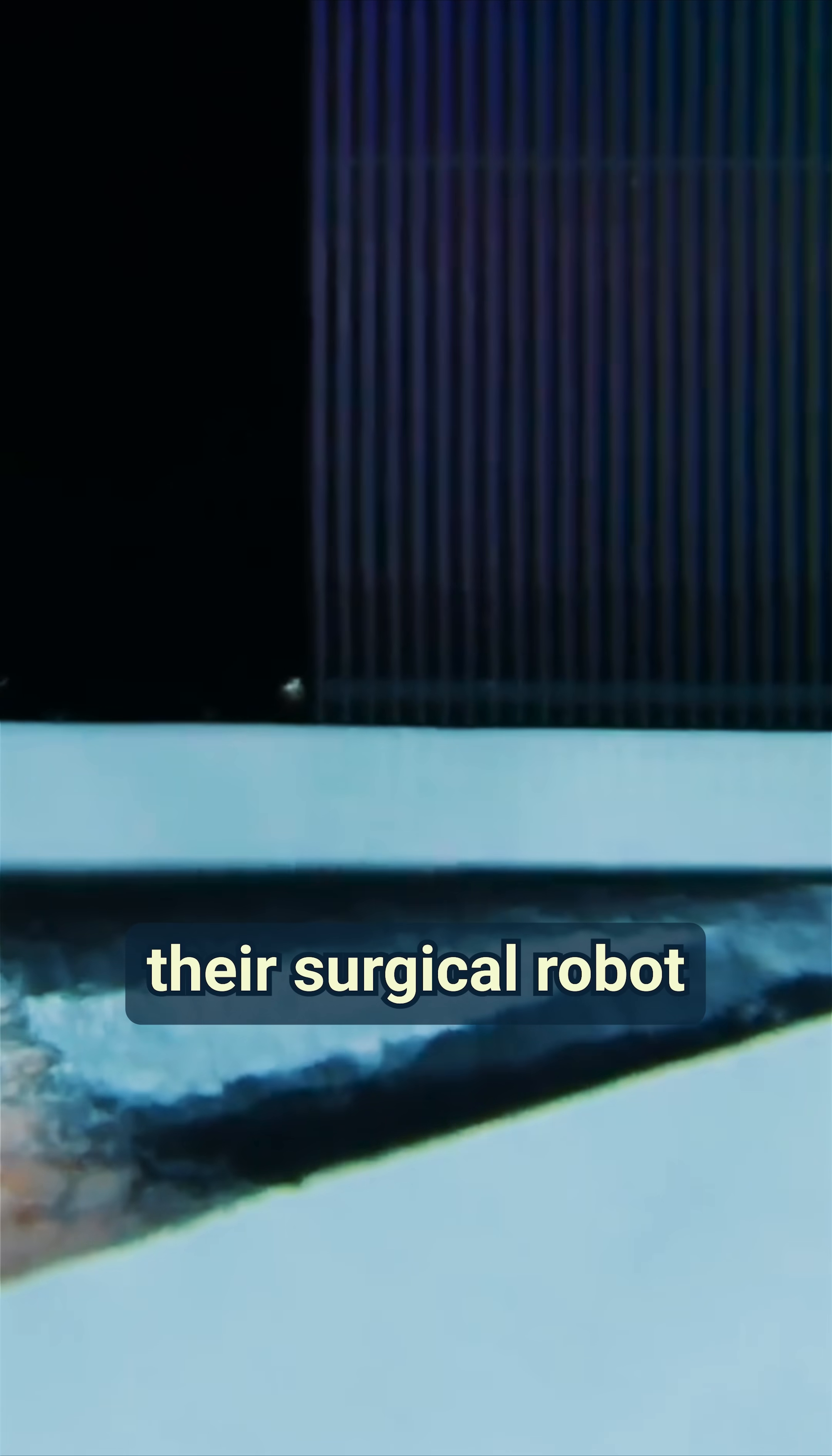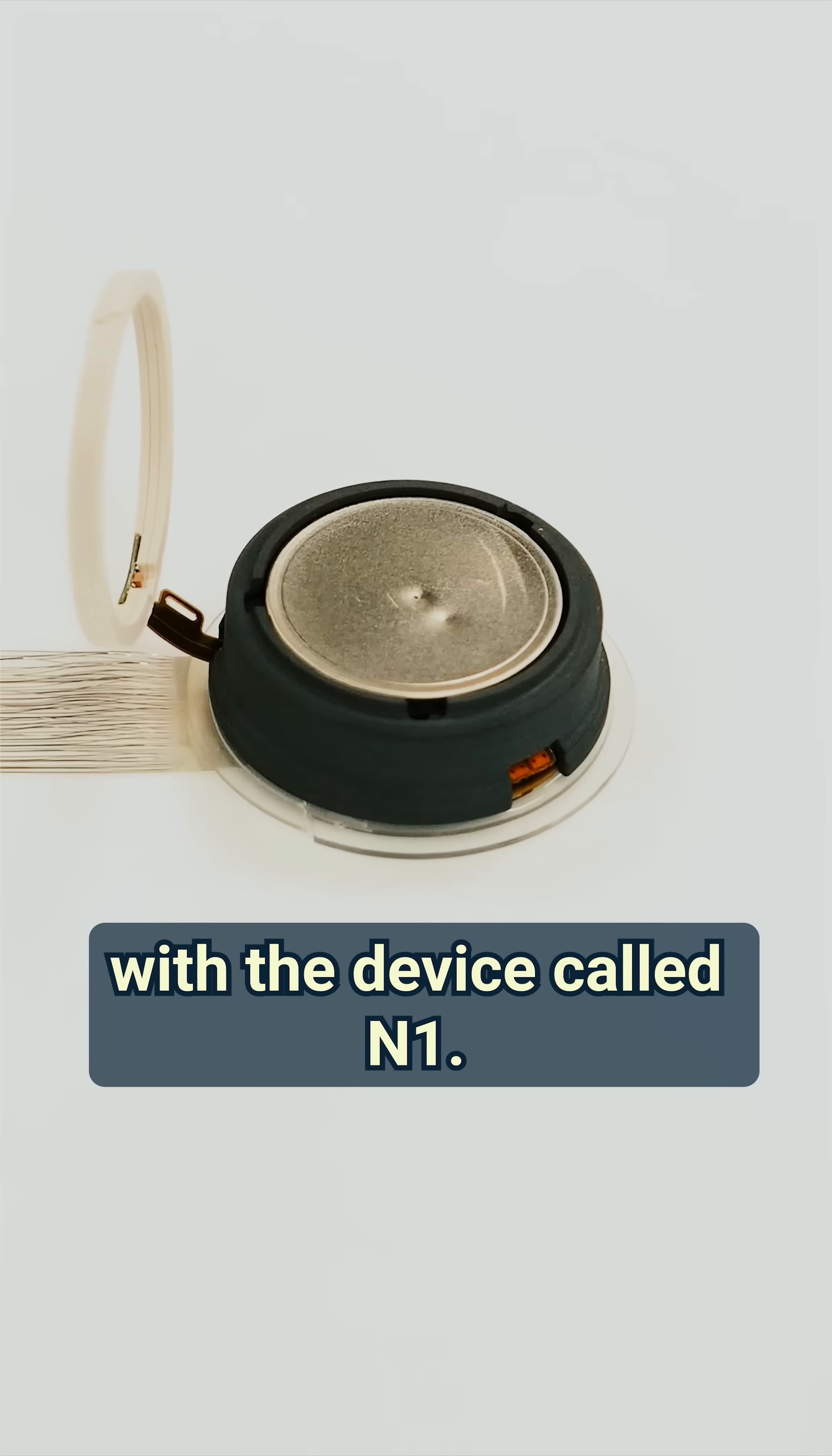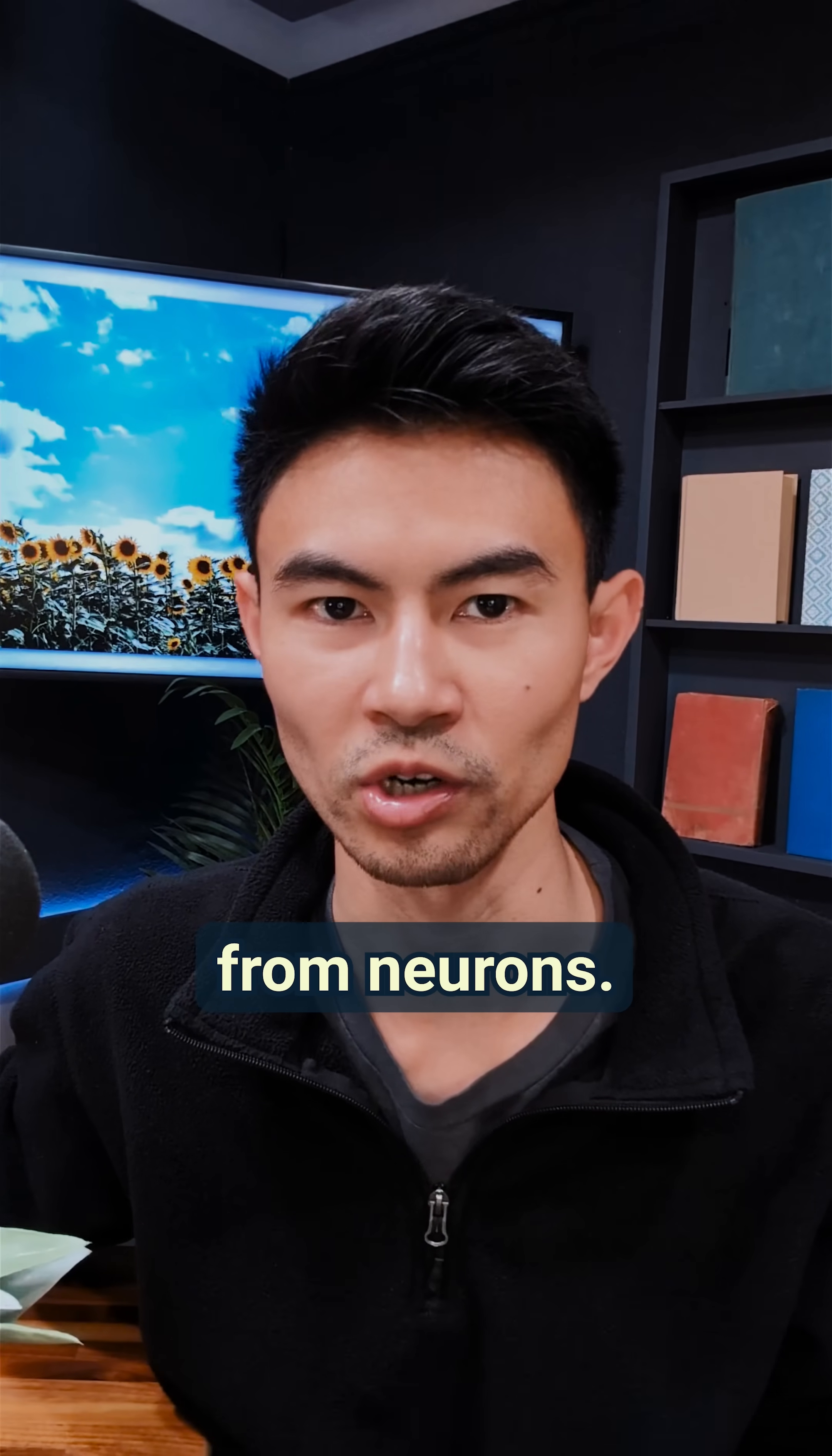Neuralink uses their surgical robot called R1 to image the location and then sew these tiny threads into the brain tissue while avoiding blood vessels. They then cover up the hole in the skull with the device called N1. These little probes can send electrical signals to stimulate our neurons or get information from our neurons.